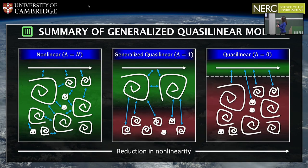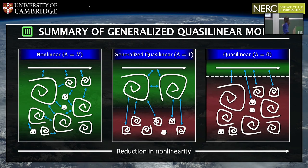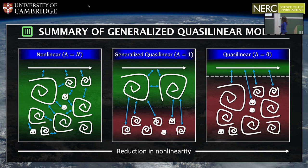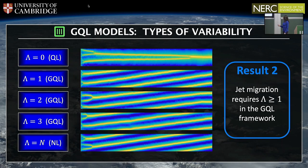To see how this fits into the hierarchy of models: the fully non-linear model has lambda equal to the numerical resolution, allowing all possible non-linear interactions. The quasi-linear model has lambda equal to zero, only allowing interactions between the jets and the directly forced zonal scales. The generalised quasi-linear model sits between these, with lambda between zero and the numerical resolution, only neglecting certain non-linear interactions.